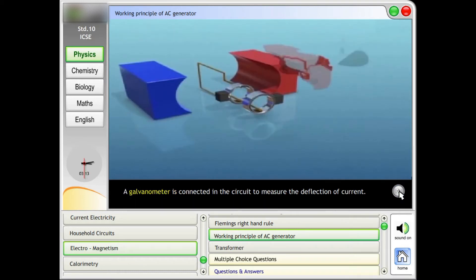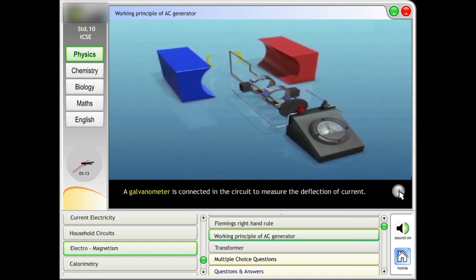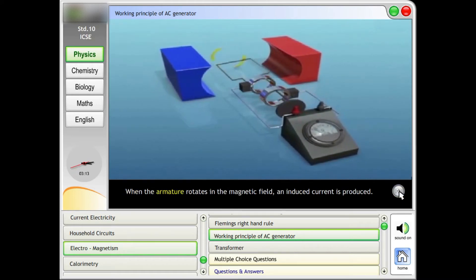A galvanometer is connected in the circuit to measure the deflection of current. When the armature rotates in the magnetic field, an induced current is produced.